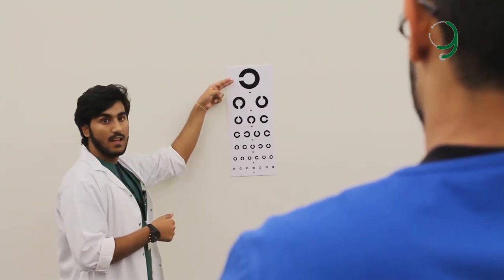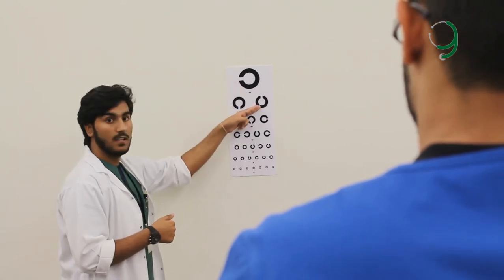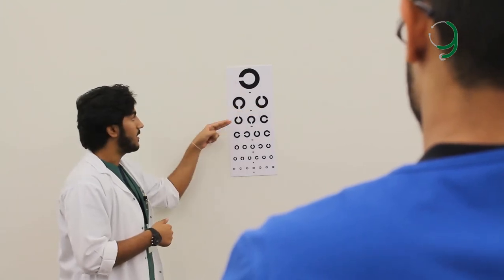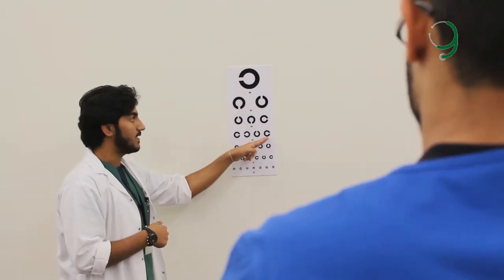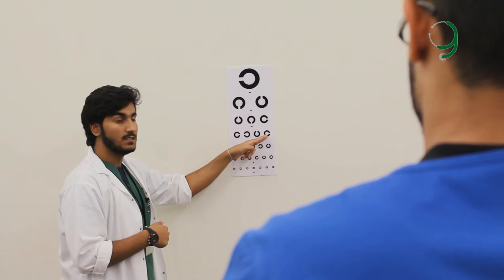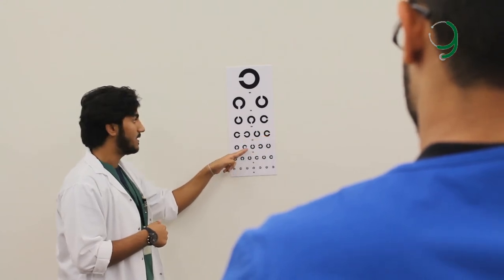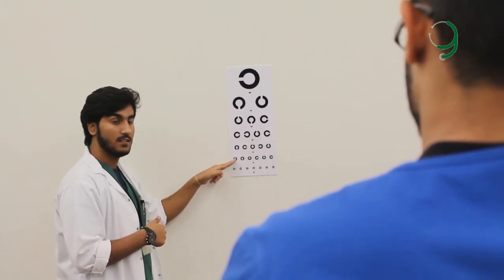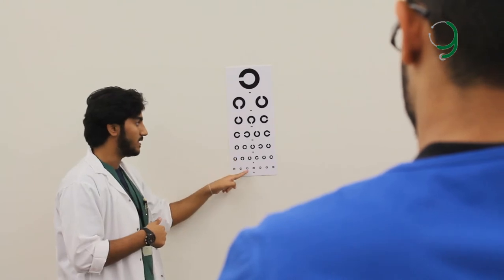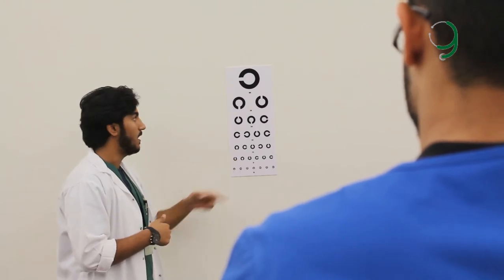Ask him to tell you what direction the letters are pointing. What direction is this? What direction is this? What direction is this? Right. What direction is this? Right. What direction is this? Up. What direction is this? Up. Alright.